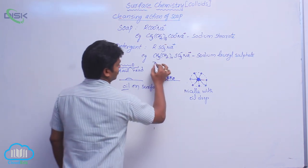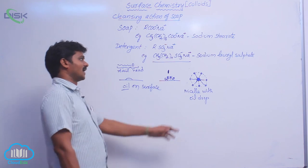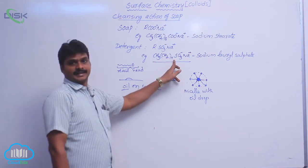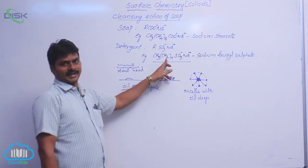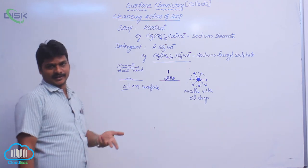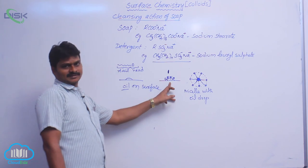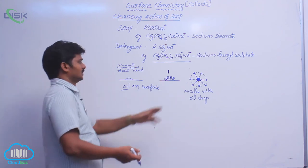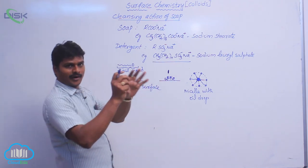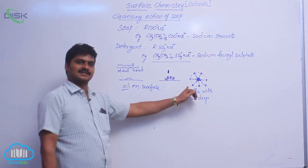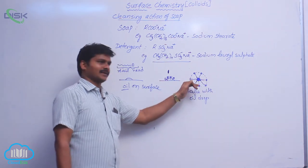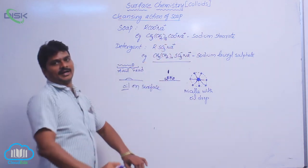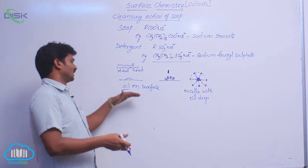For detergent, take sodium lauryl sulfate as an example. In sodium lauryl sulfate, SO₃⁻ is the hydrophilic end and the CH₃ (CH₂)₁₁ part is the hydrophobic end. This hydrophobic end dissolves in fat, oil, or grease, while the hydrophilic end lies at the surface. When the concentration exceeds a certain minimum value, the oil is broken into small droplets and those droplets are taken away by the micelles. Being polar at the interface with negative charges, the micelles interact with water and take away the oil droplets, cleaning the dirty surface.